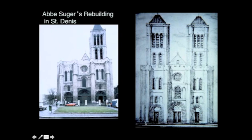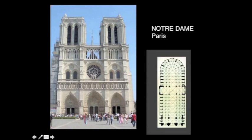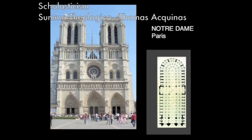Certain features were becoming normal, like the triple portal and the rose window and the twin towers on the west work, although Saint-Denis didn't quite pull that one off. By the time we get to Notre Dame in Paris, it almost looks like it's been perfected — clarified with a kind of scholastic precision. By scholastic precision, I'm referring to the school of philosophy most eloquently discussed in the Summa Theologica by Thomas Aquinas, where categorization, organization, and correspondence between the heavens and earth are mapped out with mathematical precision.